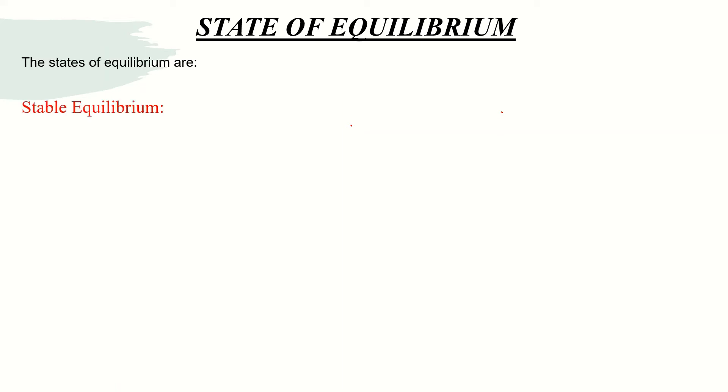We have three states of equilibrium: stable equilibrium, unstable equilibrium, and neutral equilibrium.